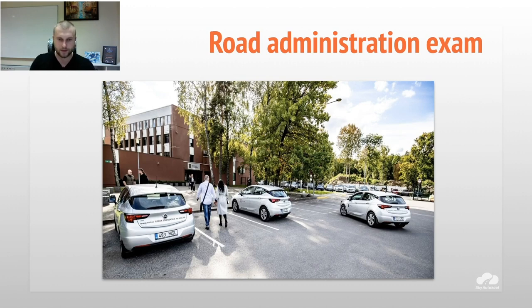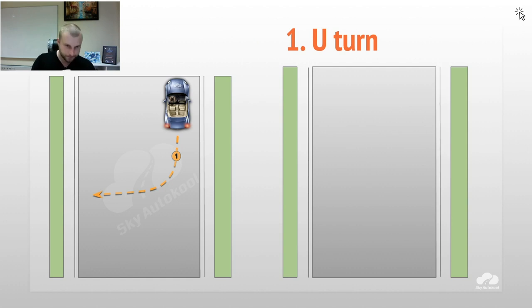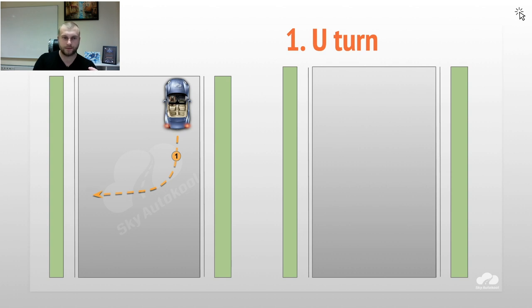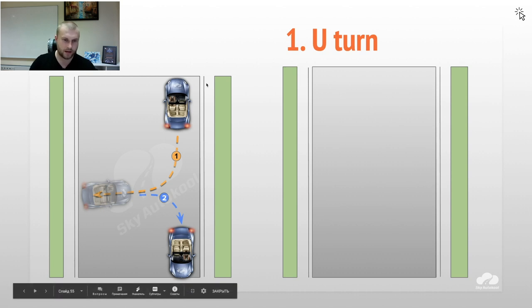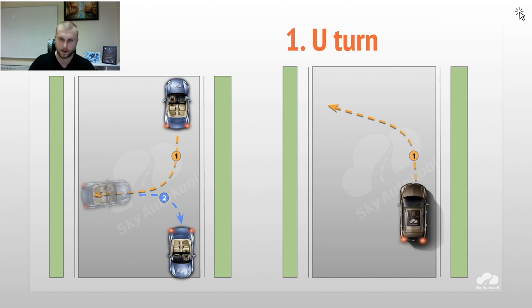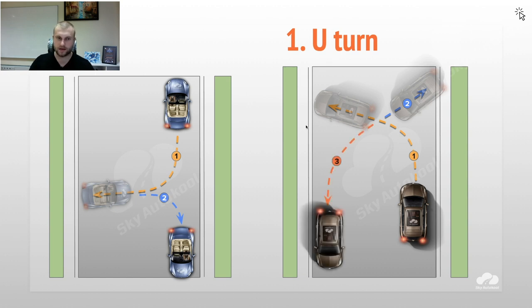The first exercise that can be on the exam is the u-turn, and it can be done in two different ways. In the first option on the left side, you reverse backwards to the left and then go right. The second option — you go left, then reverse backwards and go straight. That's how you finish the exercise.